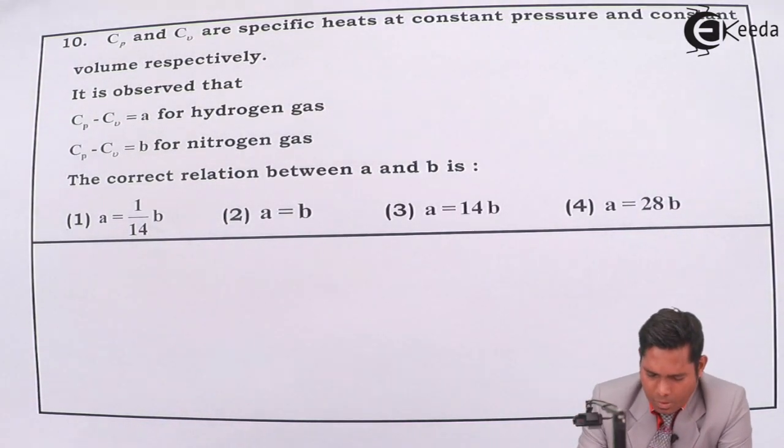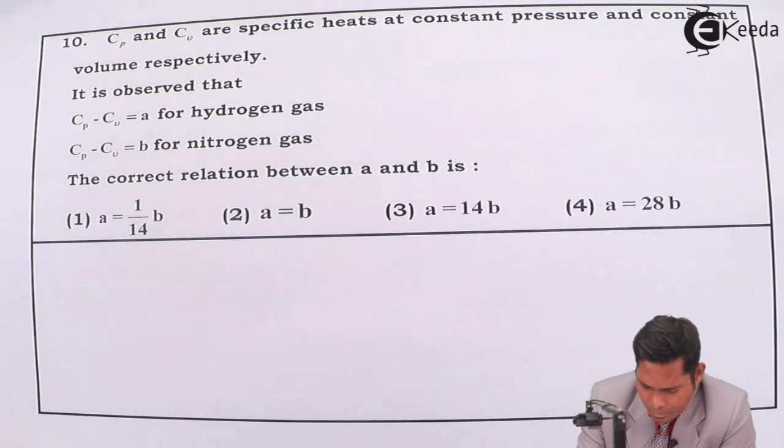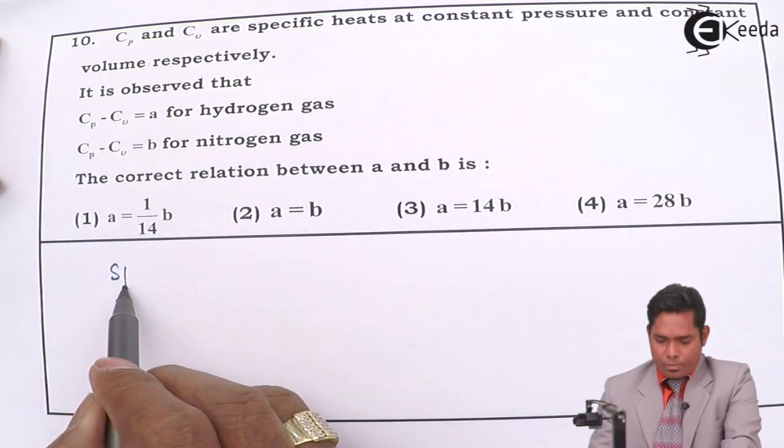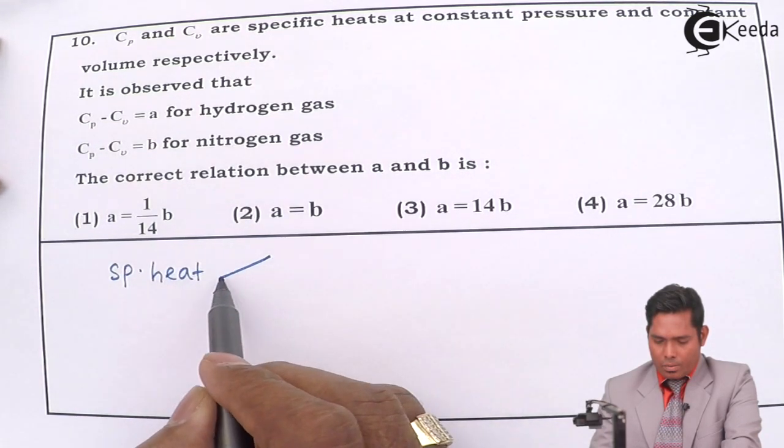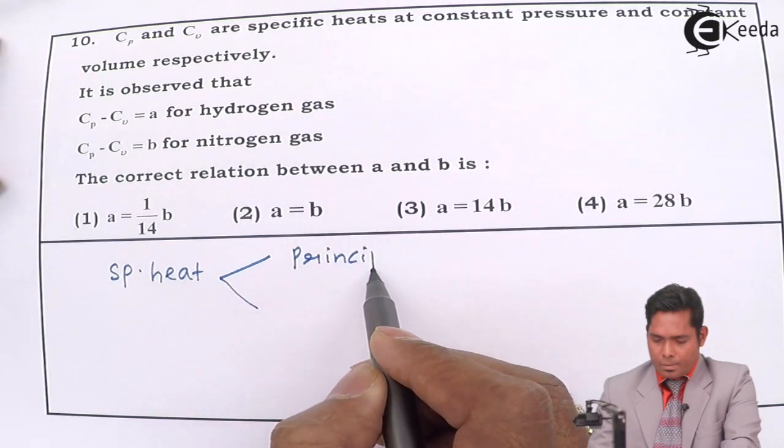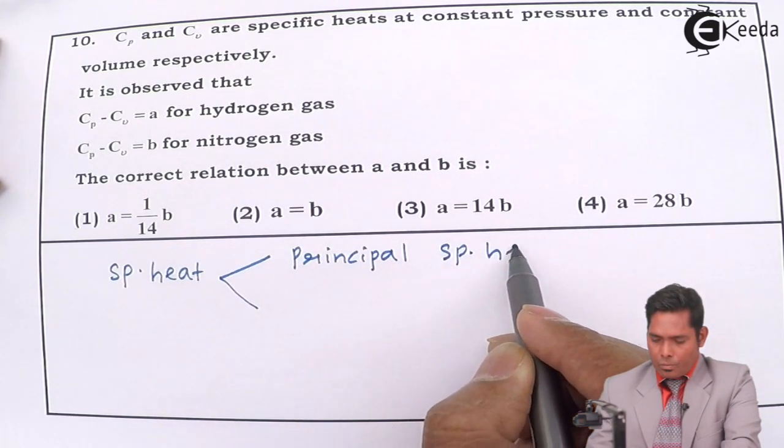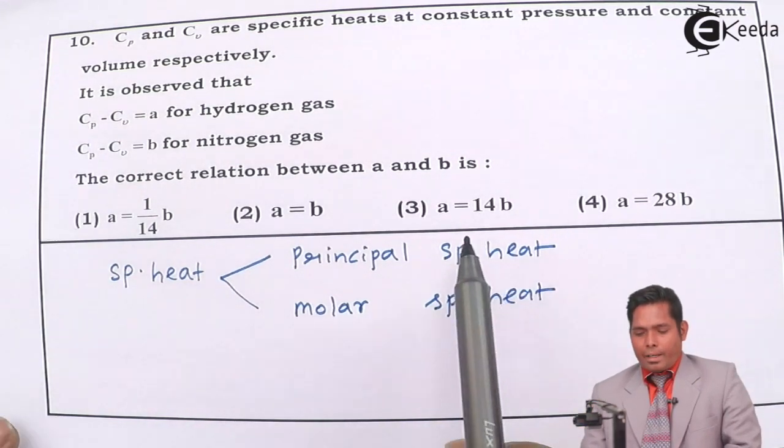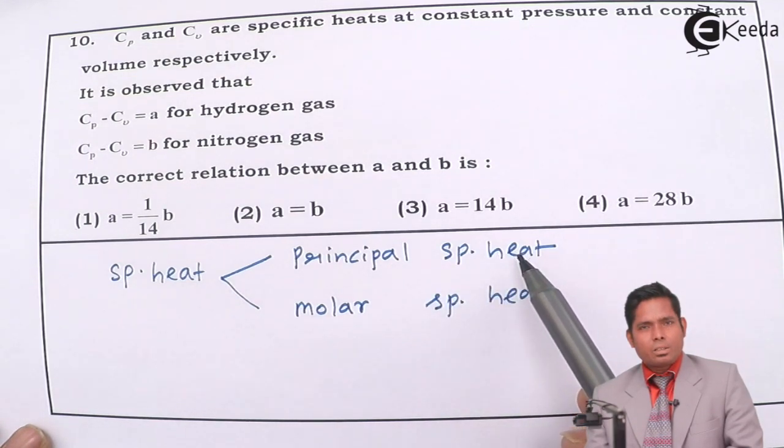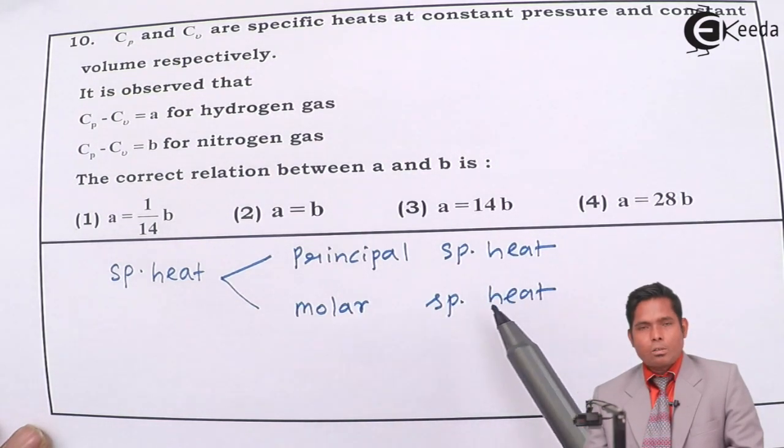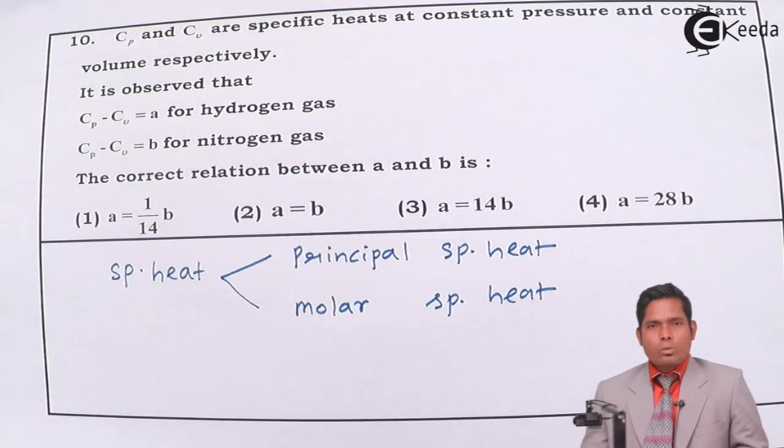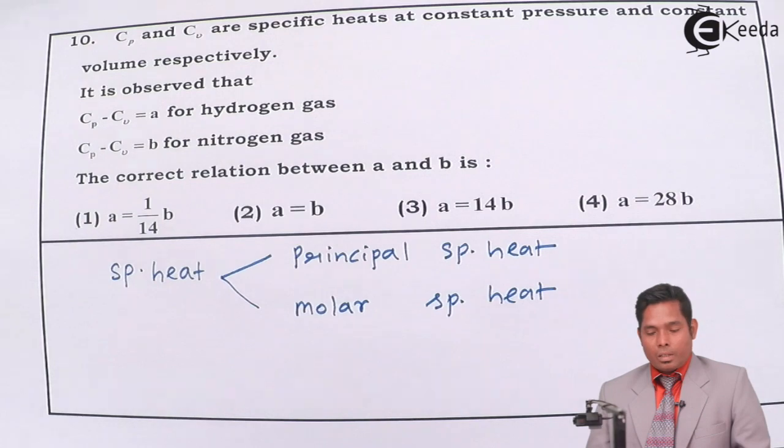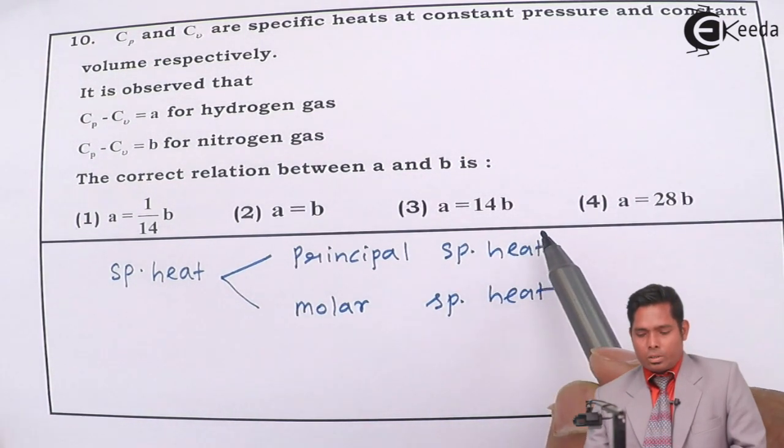This question is a bit ambiguous because specific heat is of two types. One is principal specific heat, another is molar specific heat. So if I write the equation of Cp minus Cv in terms of principal specific heat the answer is something else, and if I write molar specific heat the answer will be something else. So this question has two answers. Let us solve and we are providing both the solutions, both the answers.